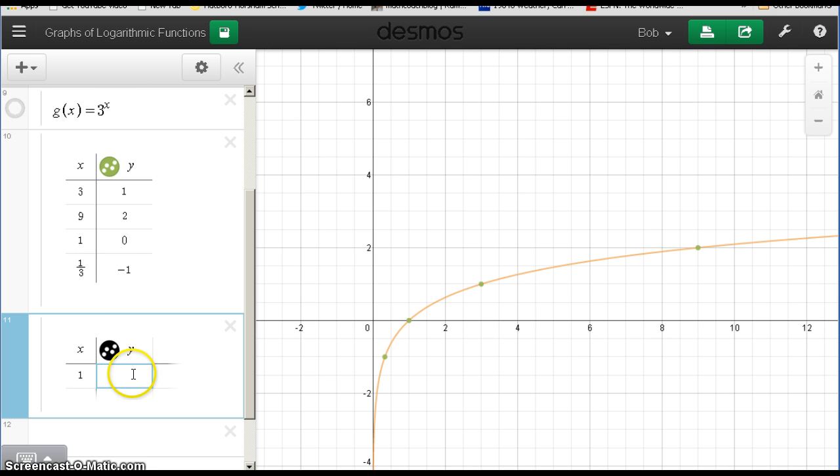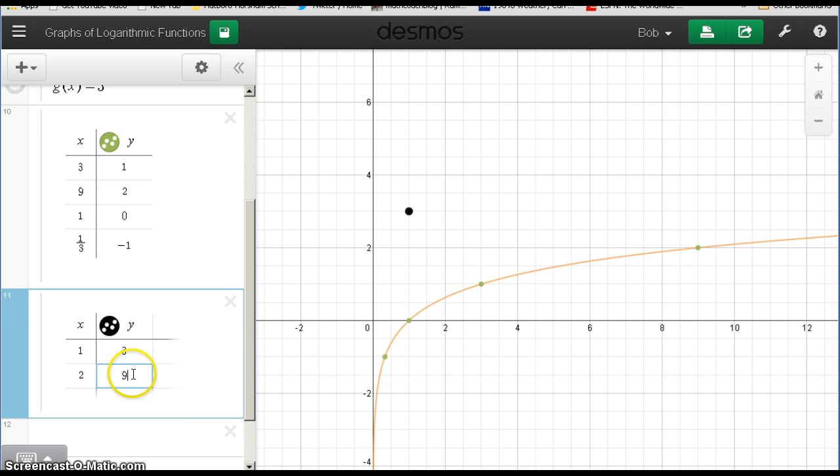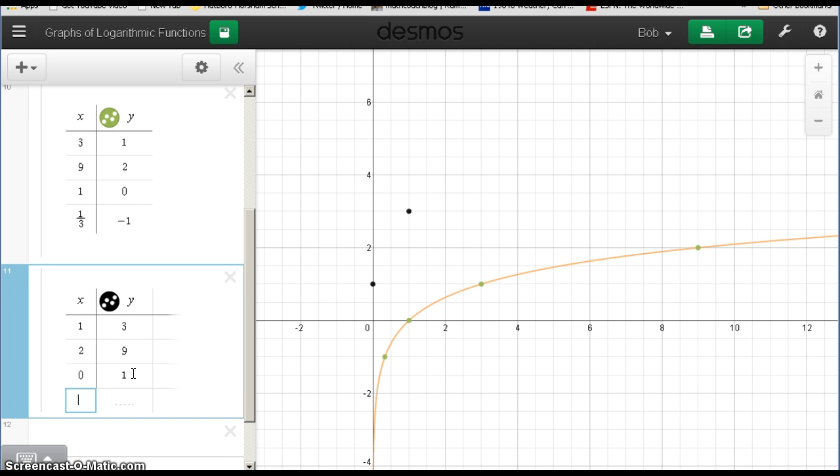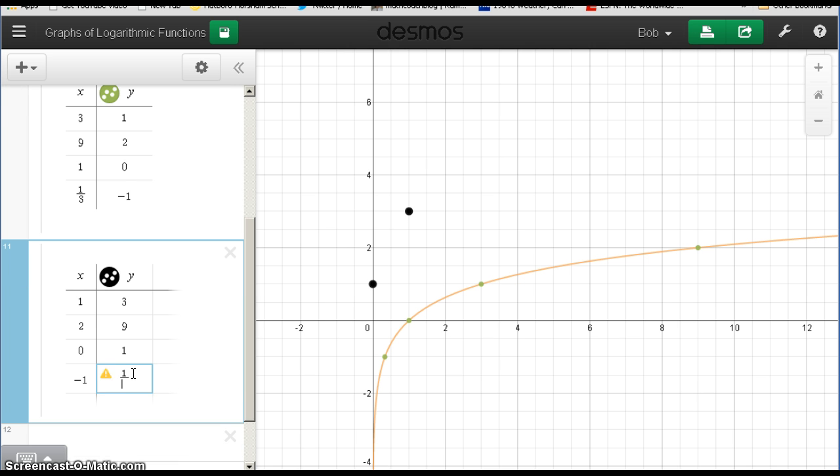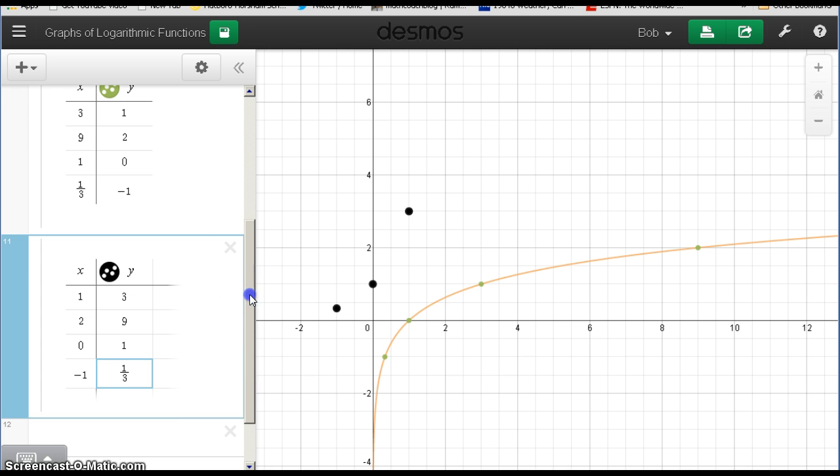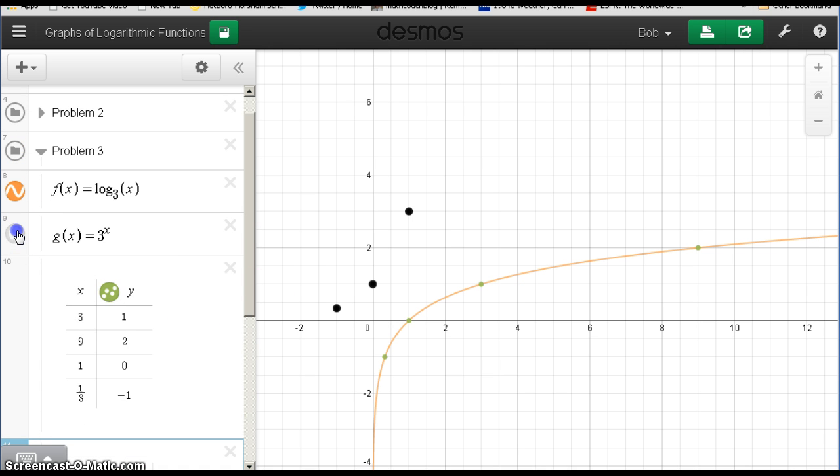3 to the 1st is 3. 3 squared is 9. It's going to veer out of control very quickly. 3 to the 0 power is 1. 3 to the negative 1st power is 1 third. So I start to plot these points and now I can get an idea of what it looks like by actually graphing it and making it a nice smooth curve.